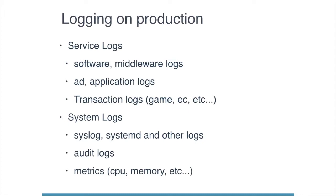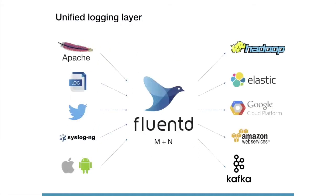On production, we have lots of logs and collect them for the business — for example, collecting service logs or system logs. These logs are used for KPIs, machine learning, service monitoring, and more. So we need to handle various log types in the real world. Fluentd has a paradigm architecture for solving this problem. We can build a unified logging layer with Fluentd — it is a glue in your data pipeline. We can collect data from any data sources and send data to any destination.